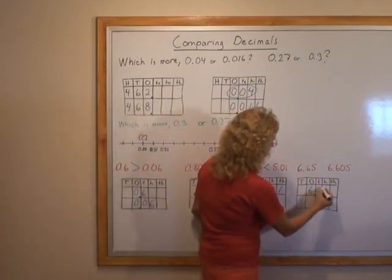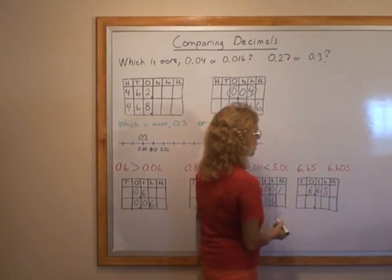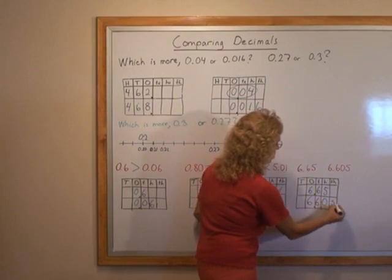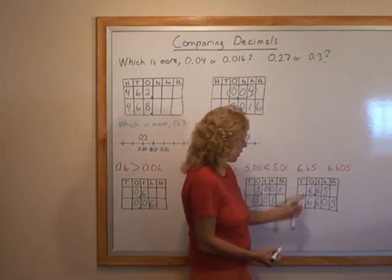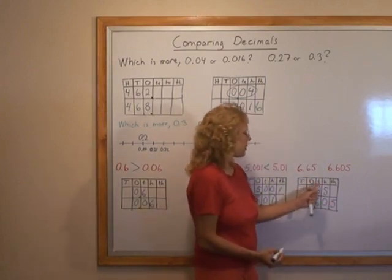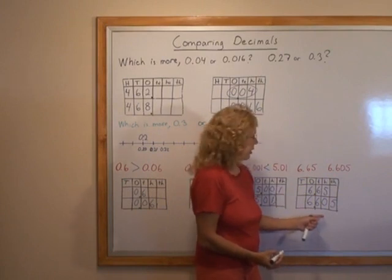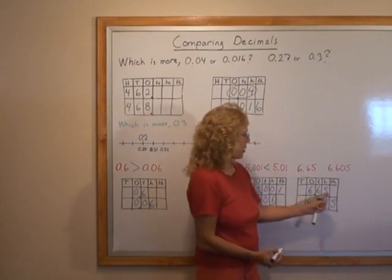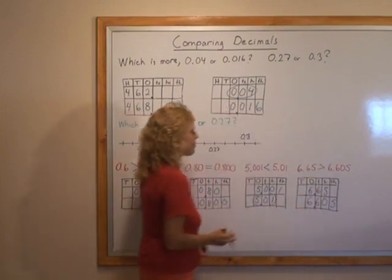Lastly, I write 6.65 and then this other one, 6.605. Which one is more? They have the same amount of ones, same amount of tenths, but this one has hundredths, this one does not. So 6.65 wins and it's greater.